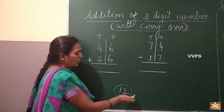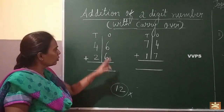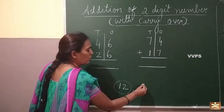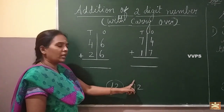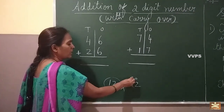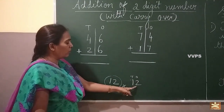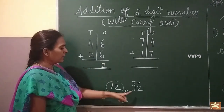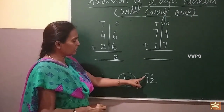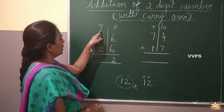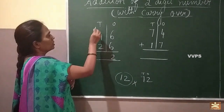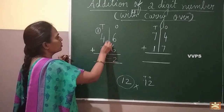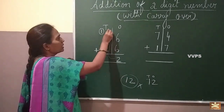So how will you record an answer of twelve? You have to mention whether it is in one space and ten space. So two is in one space — write two in one space. And this one is in ten space — write one in ten space. This is what we call carry over, because from here it is carried over — it is moving from here to there. Got it children?